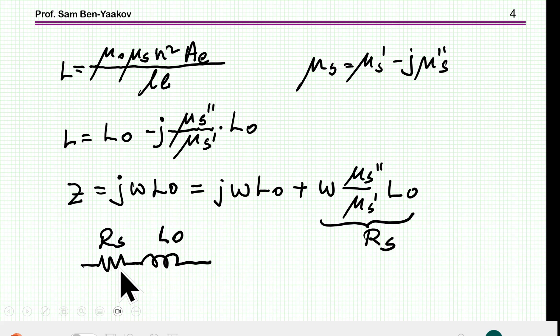That is, the losses are expressed here as a series resistor. And this is the value of the resistor. It is a function of omega, that is frequency dependent, and then it's also dependent on imaginary permeability, which by itself is a function of frequency. And the inductance, the larger the inductance, the larger will be Rs.